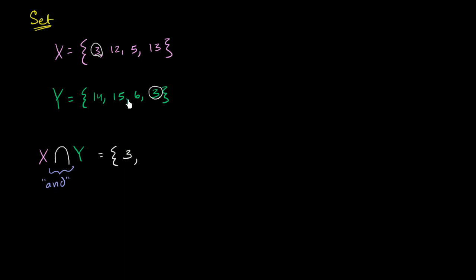The number 5 is in X but not in Y. And then we have the number 13 is in X but not in Y. And so over here, the intersection of X and Y is the set that only has one object in it. It only has the number 3. So we are done. The intersection of X and Y is 3.